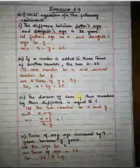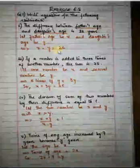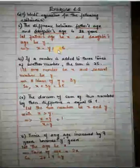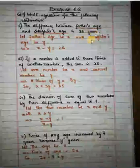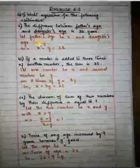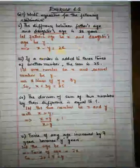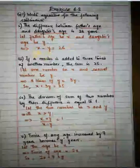Now come to exercise 6.8. Question number one is: write equations for the following statements. You have studied these types of statements in earlier classes. Read the statement carefully: the difference between father's age and daughter's age is 26 years. There are two unknowns, so suppose father's age to be x and daughter's age to be y. Since the difference is a positive number, father's age is greater than daughter's age, so the equation is x minus y equals 26.